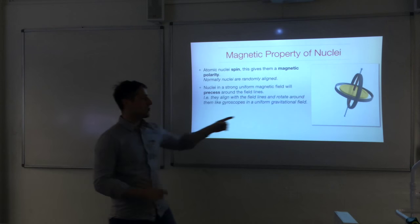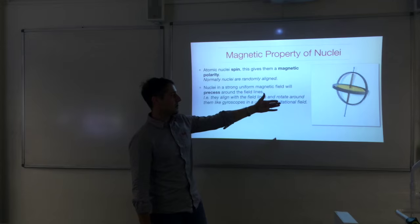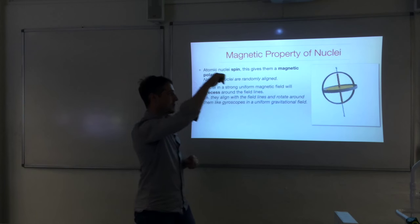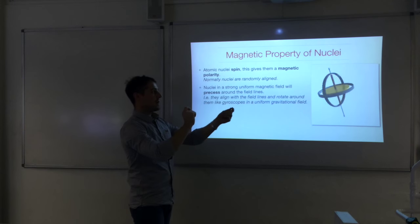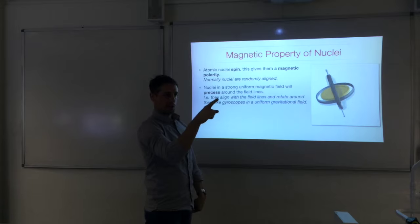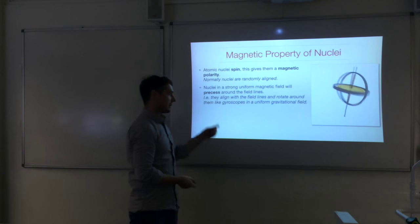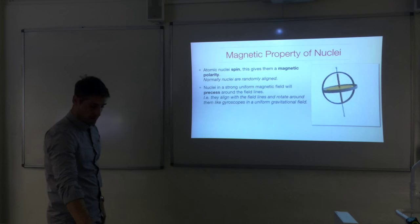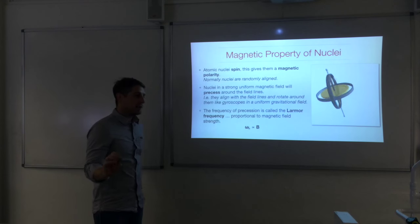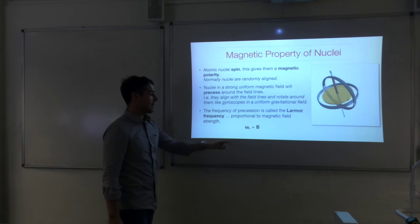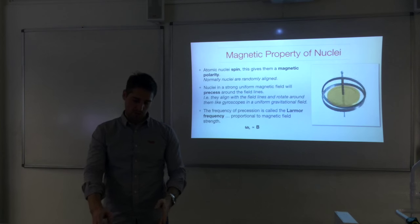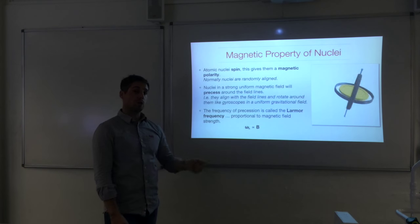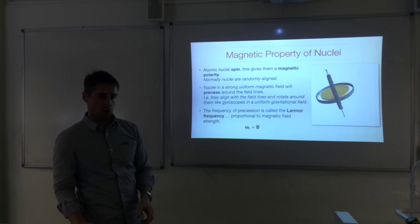Precession is a motion like a gyroscope precessing around gravitational field lines — the spinning disk's axis rotates around the field lines. Nuclei do the same in the magnetic field. The frequency at which they precess is called the Larmor frequency, and it is proportional to the magnetic field strength. So if you double the magnetic field strength, you double the Larmor frequency. This gives you a way to control the Larmor frequency for the nuclei in different parts of the body using gradient coils.